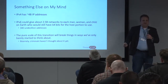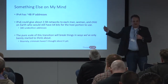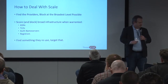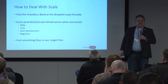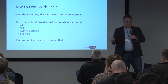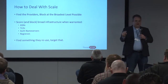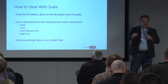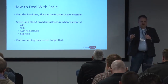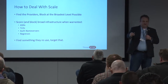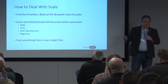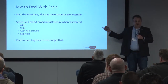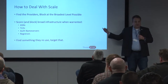It's on Decilion — so if you've learned nothing else, you've learned that number. So how to deal with scale is finding ways to do broad blocking safely — going after providers, going after the worst TLDs, the worst registrars, the worst ASNs, and name servers.